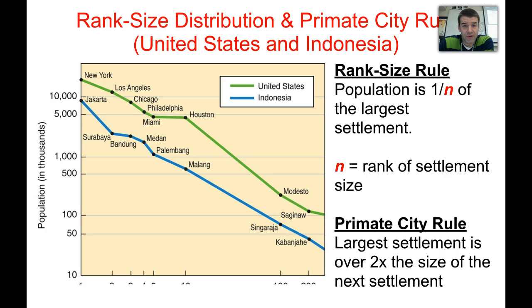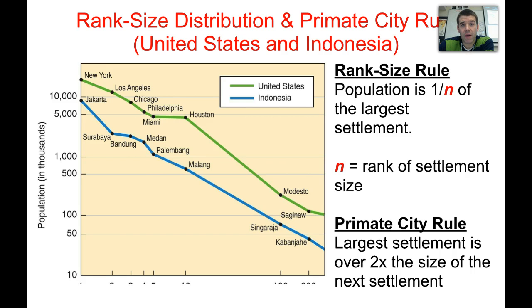If we look at Indonesia, we see an example of the primate city rule, where the largest city — Jakarta — is more than twice the size of the second largest settlement. This doesn't necessarily indicate level of development, since London is also a primate city in the UK. What the primate city rule describes is one major urban area that dominates the landscape and is the primary source of distribution of all goods and services. There are geographic factors that determine whether a country has a primate city, but the key criterion is that the largest city must be at least twice the size of the next largest settlement.